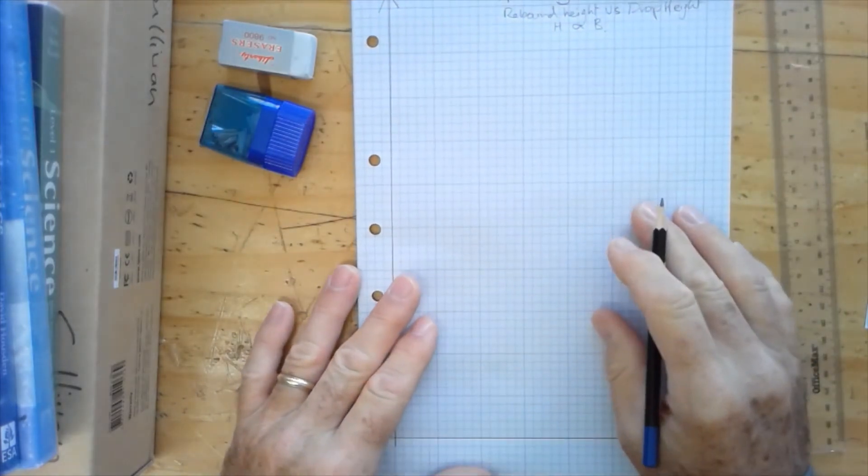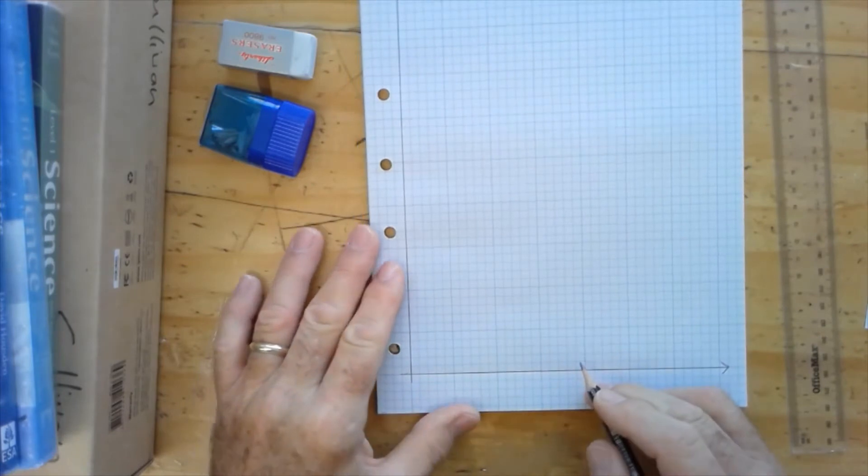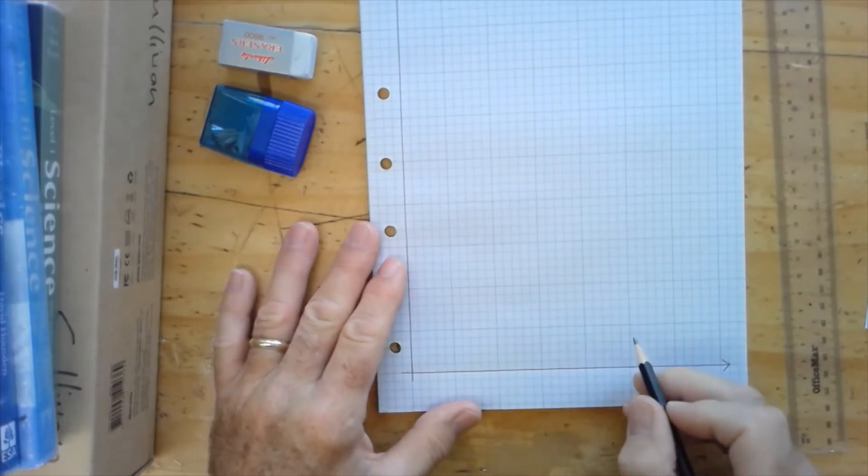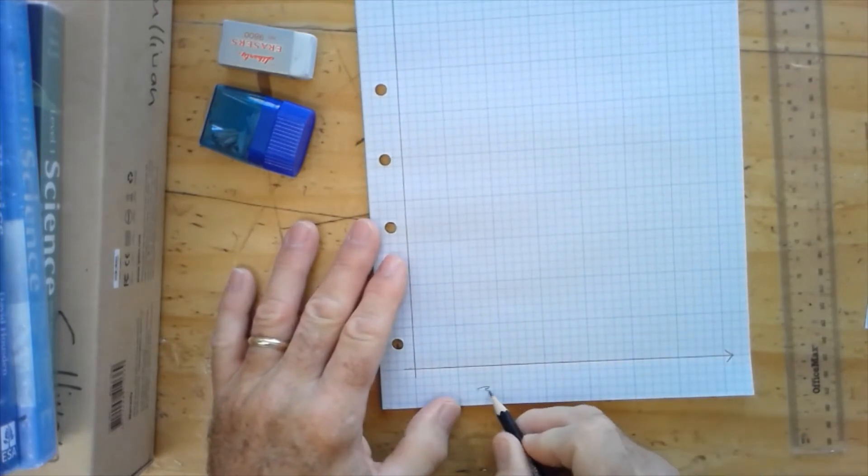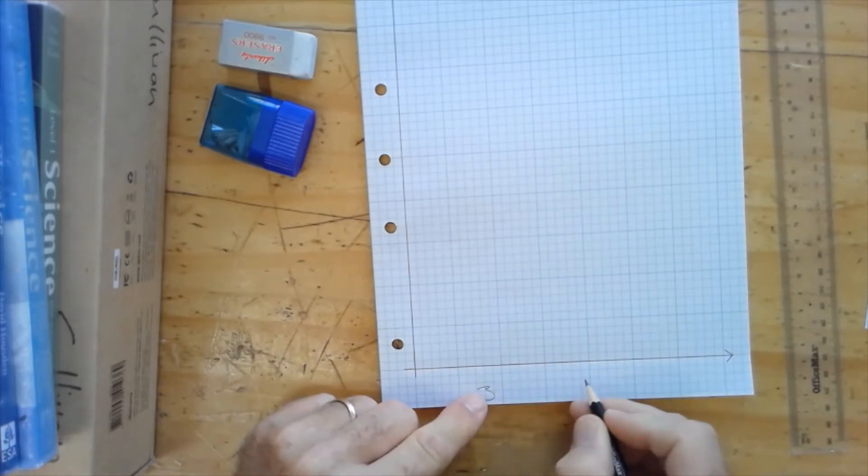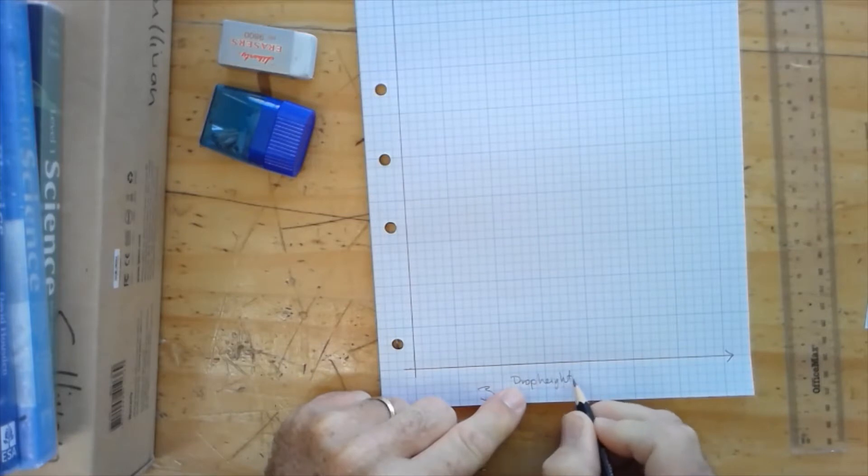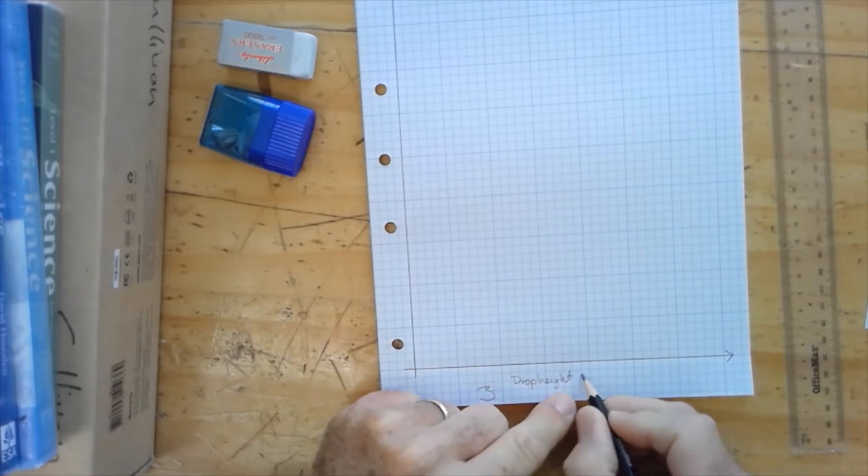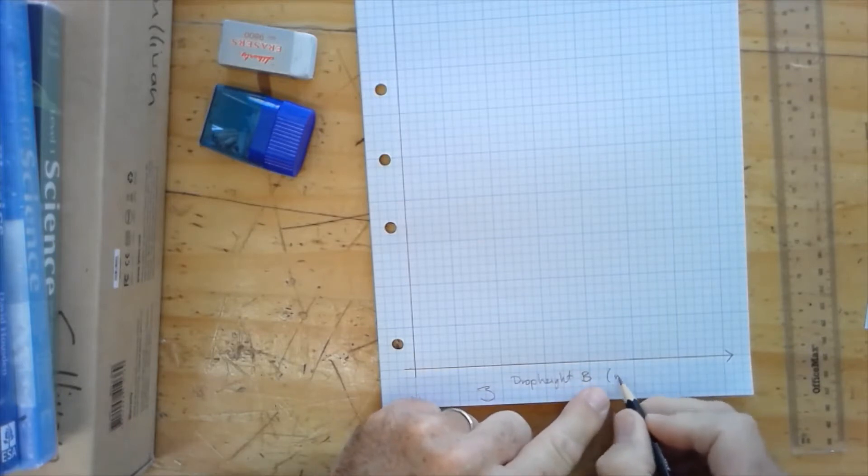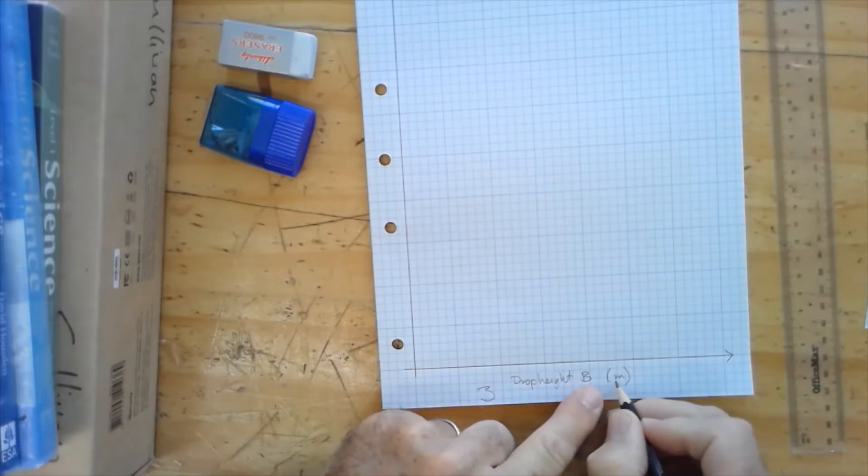And next we label our axes, and we label it with three things, three things along the x-axis. The independent variable is drop height, drop height. In our case, it's going to be B, and units are meters. We never use centimeters, we'll use meters.